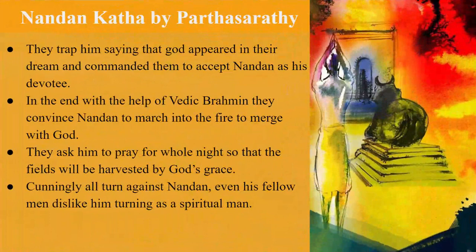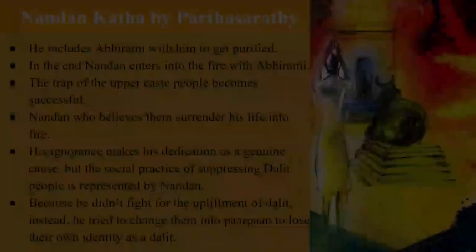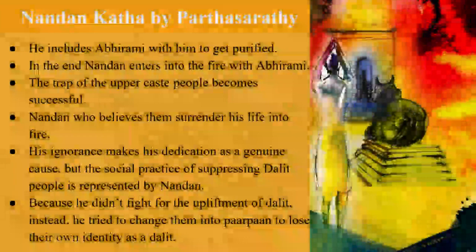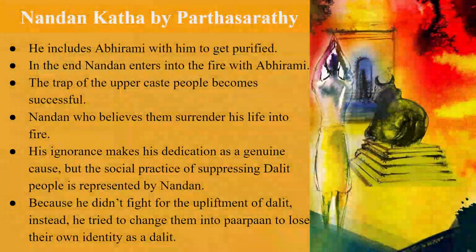They ask him to pray the whole night so that the fields will be harvested by God's grace. Cunningly, all turn against Nandana; even his fellow men dislike him, turning against him as a spiritual man. The upper caste people inform him that God has given a command to dip into fire so that he will get purified. Believing them, Nandana accepts their words and prepares himself to enter the fire. This shows the peak of casteism and how far one can go to suppress the Dalits when they try to come out of their suppressed state. He includes Abhirami with him to get purified, and at the end Nandana enters into the fire with Abhirami. The trap of the upper caste people becomes successful, as Nandana surrenders his life into fire.